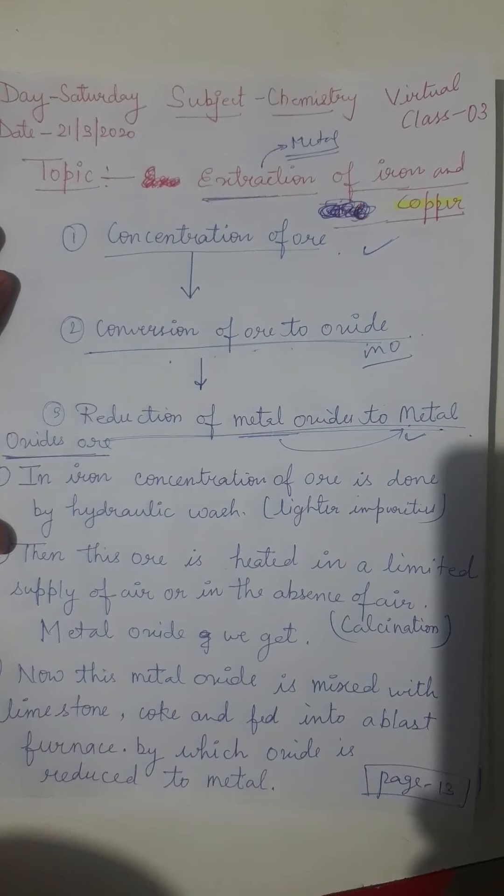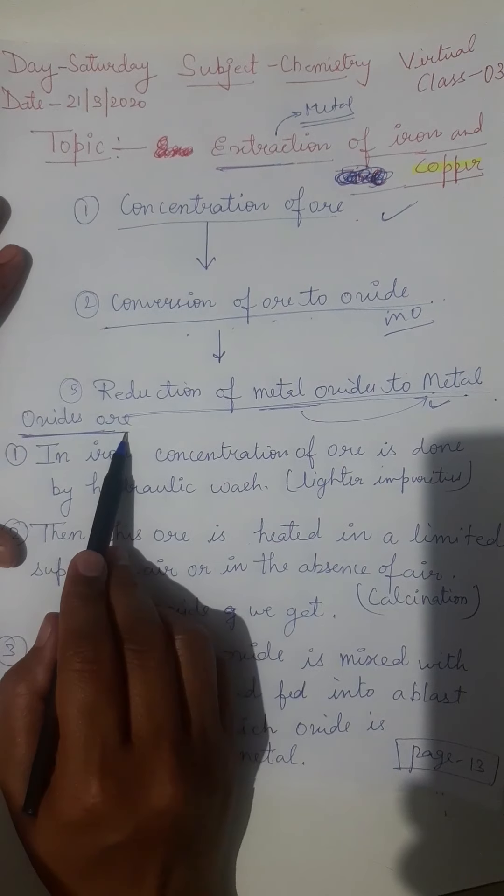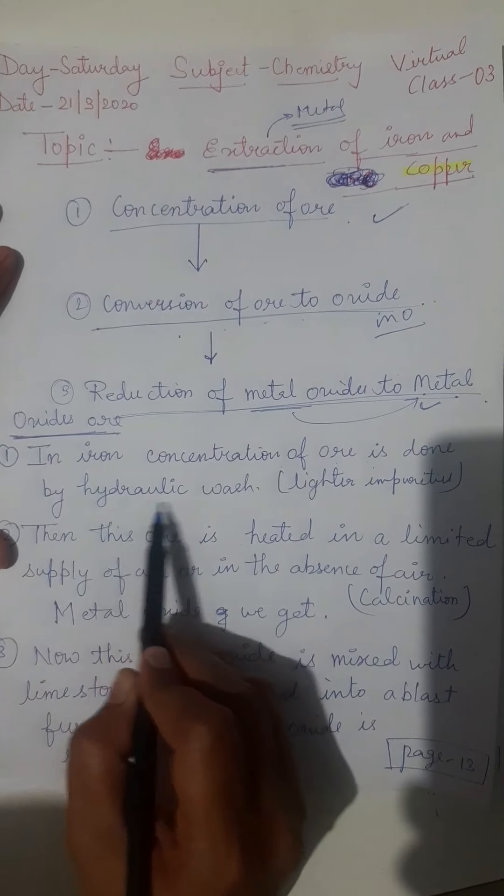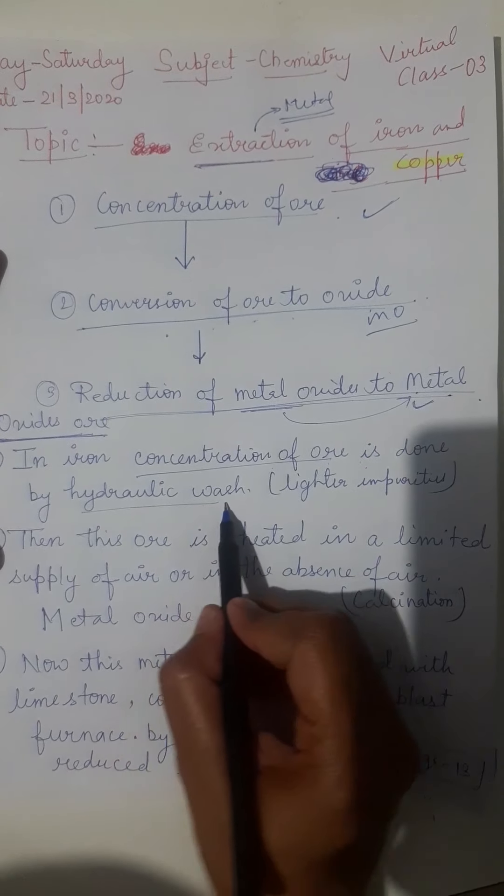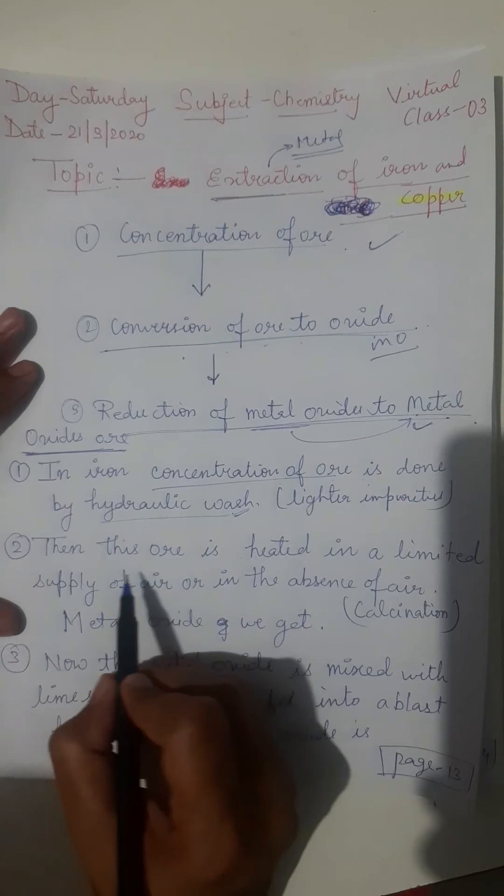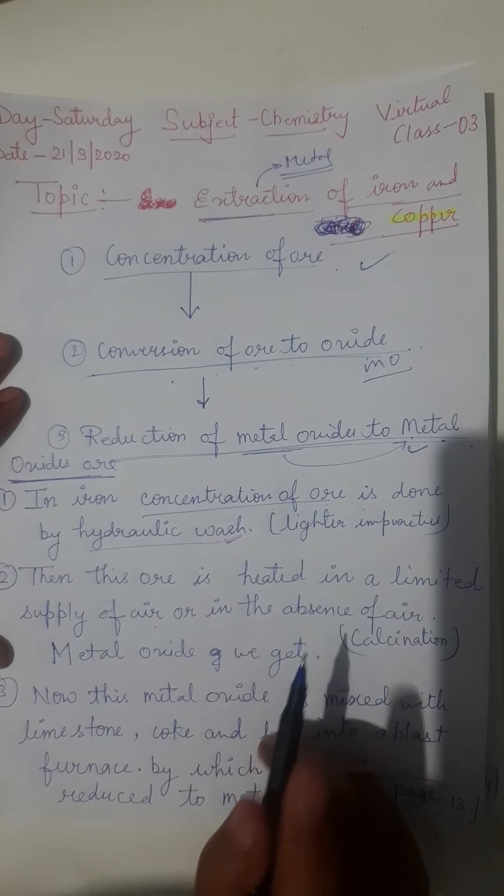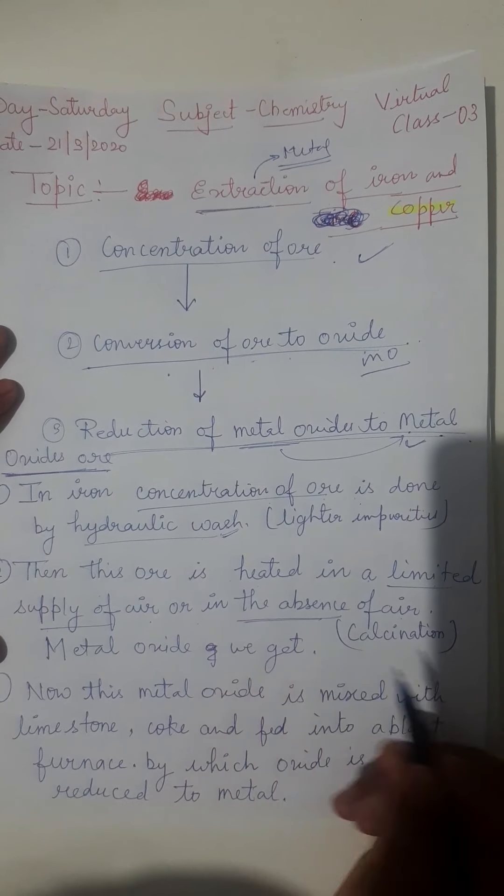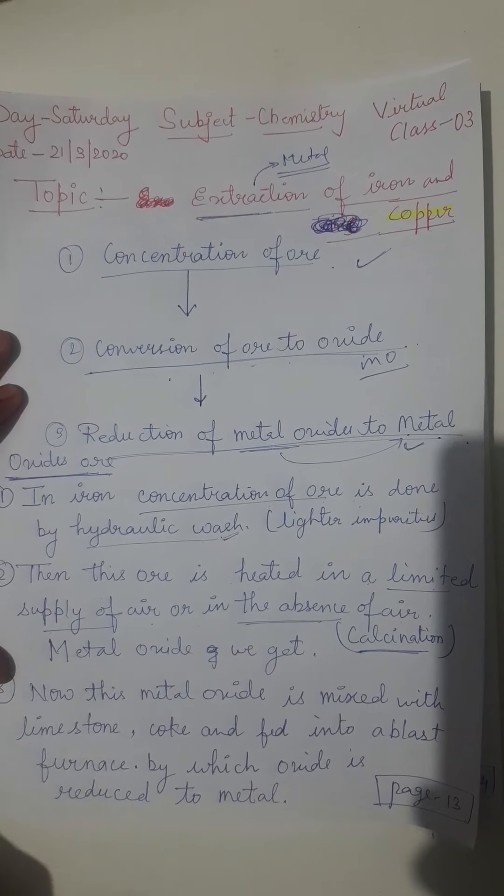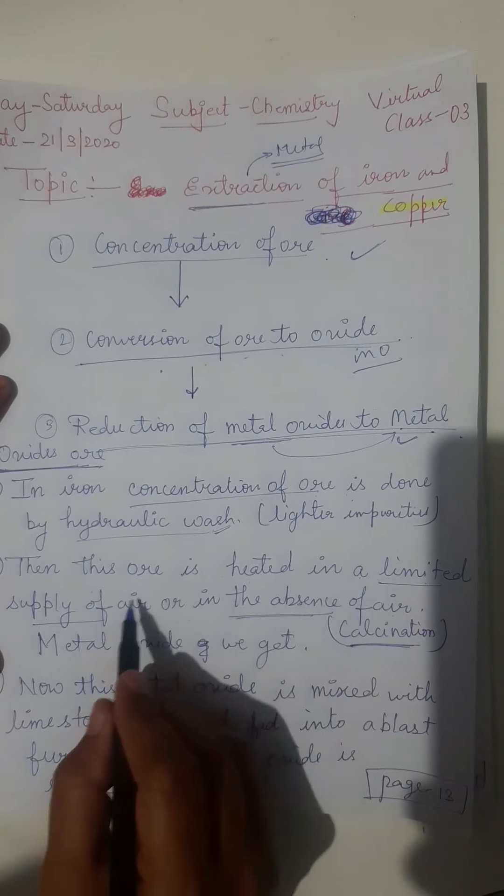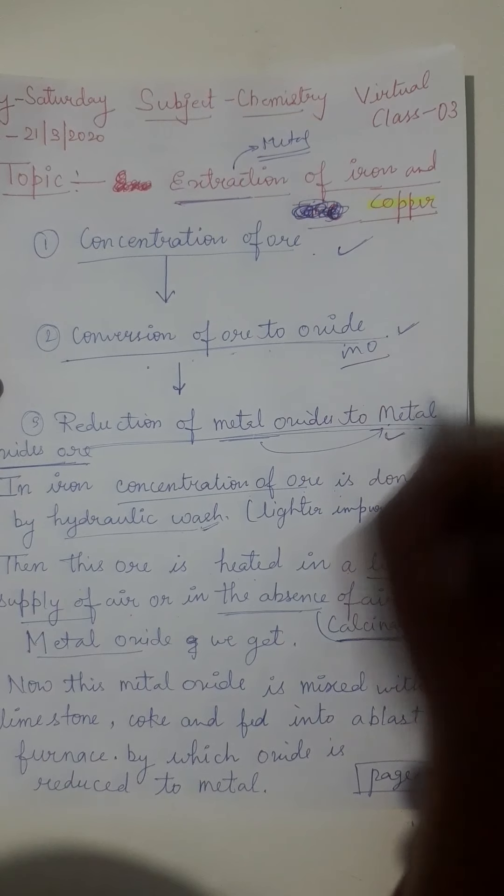We already studied these three processes but now we are going to study about iron. For oxide ores, concentration of ore is done by hydraulic wash. Second point: this ore is heated in the limited supply of air or in the absence of air. We have studied that limited supply of air or absence of air, the process is called calcination. Through calcination we are heating to get metal oxide.